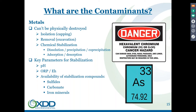One area we're doing a lot of treatability work on right now is ash pond breaches from coal tar sites. This is a big area — they've got some interesting metals including boron as well as arsenic and other typical ones, and they're very different in how to deal with them.